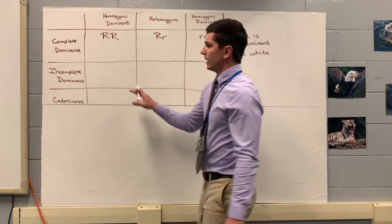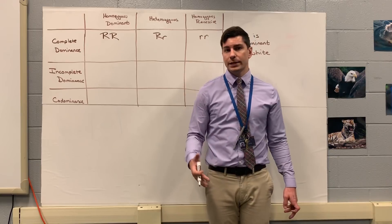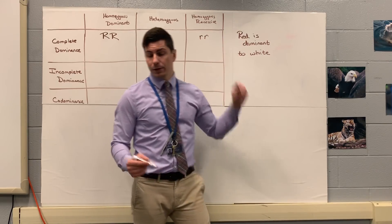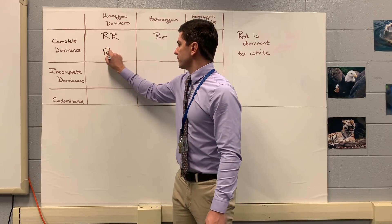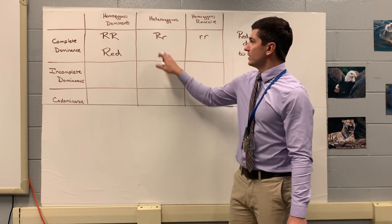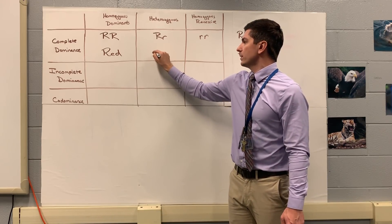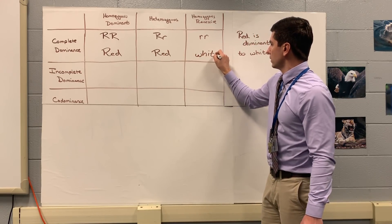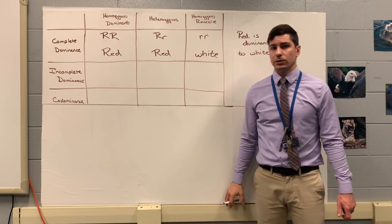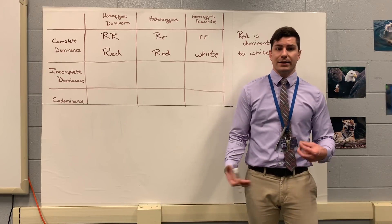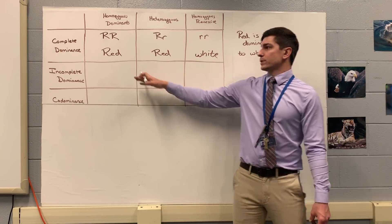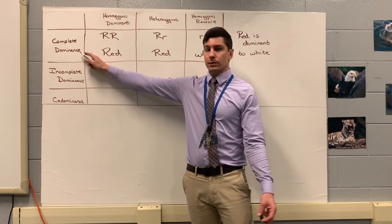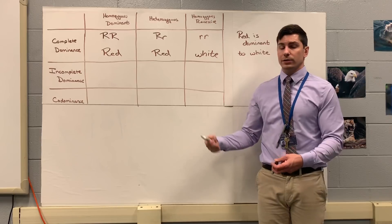For complete dominance, we only need one dominant allele — one capital letter — in order to show that dominant phenotype. So big R, big R gives us red. Heterozygous still has one capital letter, so it's still red. As long as we get that one capital letter, it's red. And the last one — little r, little r — gives us the white phenotype. On your keystone you might have to identify: if homozygous dominant is red and heterozygous is also red, what type of inheritance is it? It's complete dominance, because one capital letter shows that dominant phenotype.